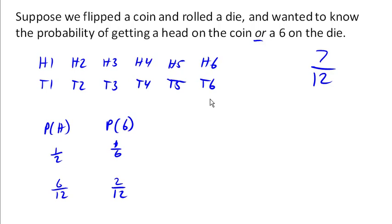And notice if we just added these 2 up, we'd get too many outcomes. We'd get 8 out of 12. Why?